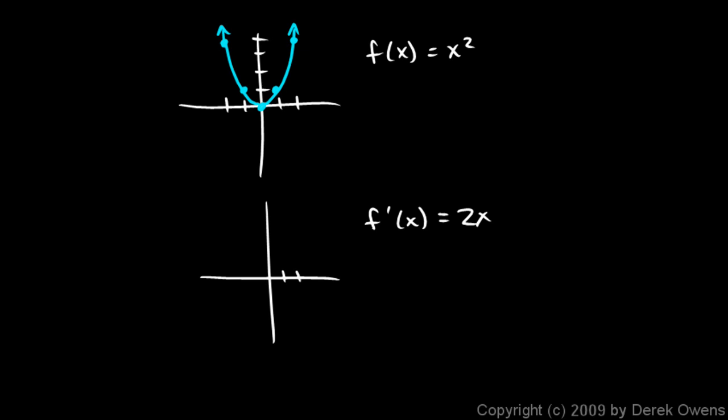And then we'll graph f prime of x, which is 2x. It's going to go through 0, 0, and then it will have a slope of 2. This is just a line with a slope of 2. So it looks something like that.